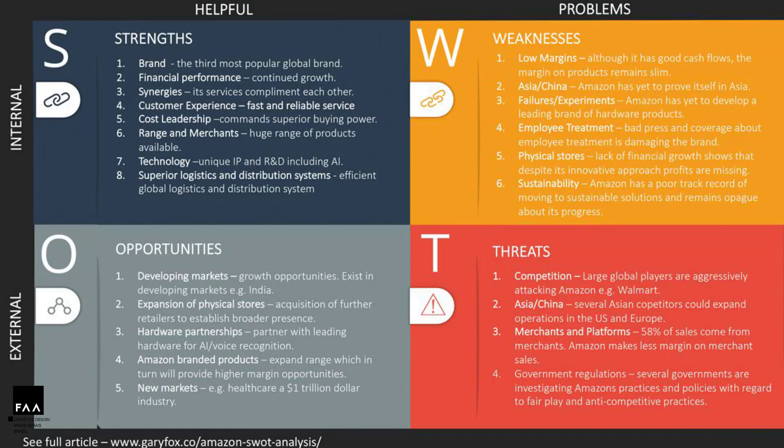The external environment is totally out of the organization's control. However, the company must know and monitor it frequently in order to take advantage of opportunities and avoid threats. Avoiding threats is not always possible, but planning can be made to minimize their effects. The combination of these two environments — internal and external — and their variables, strengths, weaknesses, opportunities, and threats, supports strategic decision-making.